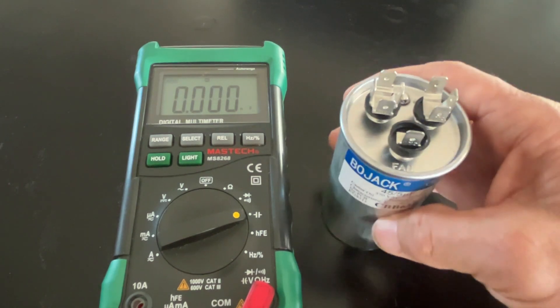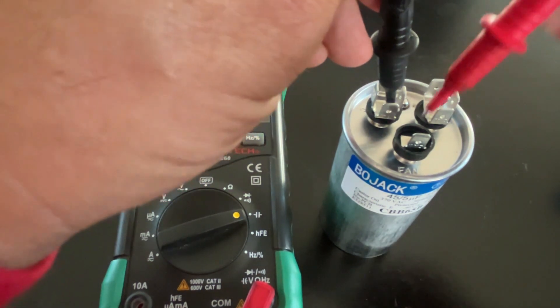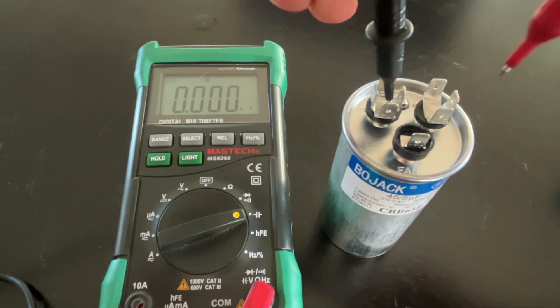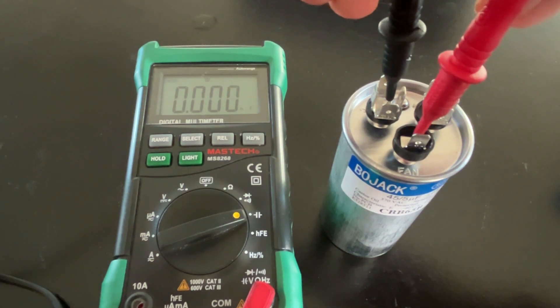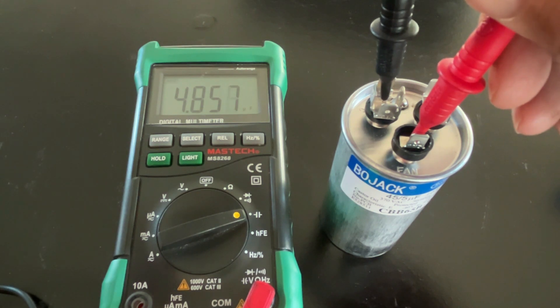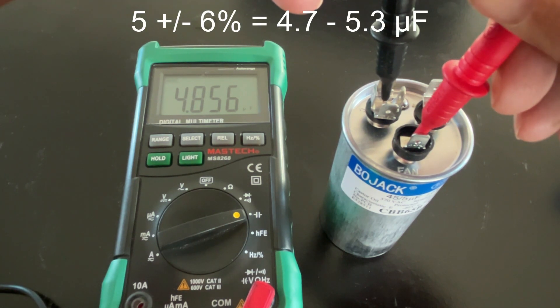So let's give it a try. All right, here's the common, here's the fan. Okay, you'll see it build up. It's reading 4.856—that's within six percent of five, so this one's good.